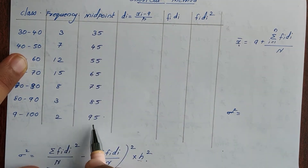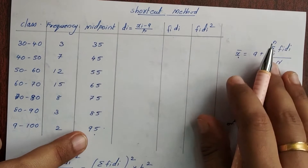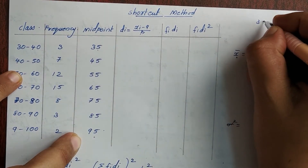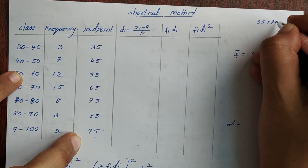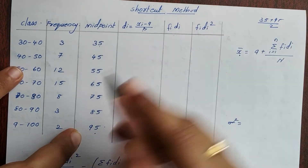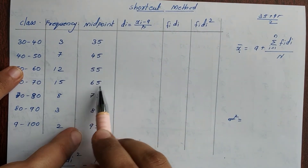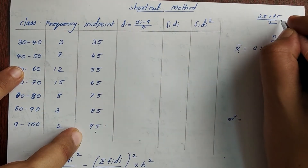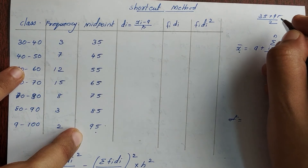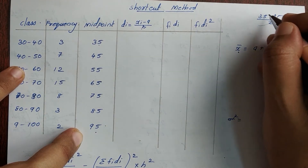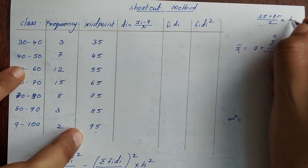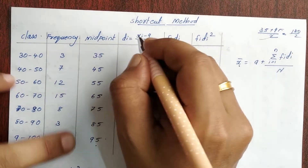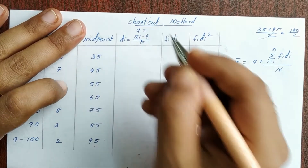Now we choose A. The range is 35 to 95. So (95 + 35) divided by 2 equals 65. If you pick the center value it makes calculation easy. So 130 divided by 2 is 65, and A equals 65.